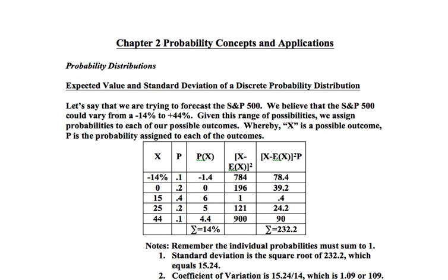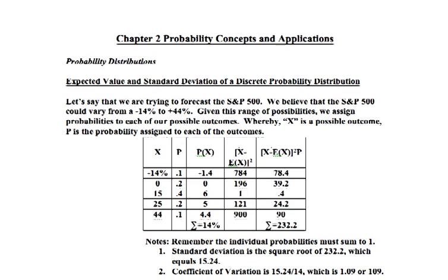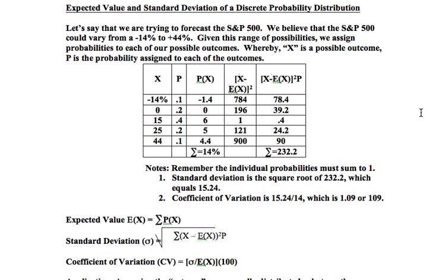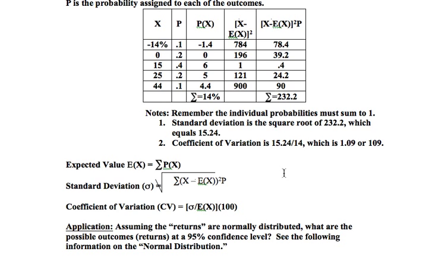10% of 784 is 78.4. We do that for each scenario, sum them up, and the sum is 232.2. Keep in mind that's not the standard deviation — that is the variance. So to get the standard deviation we simply take the square root and we come up with 15.24.